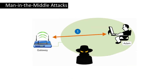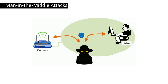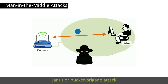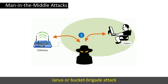Man in the middle attack. This is an active eavesdropping attack where the attacker independently connects with the victim and replays the messages between them. This type of attack is also known as Janus attack or bucket brigade attack. It makes the users assume that the contact between them is private.